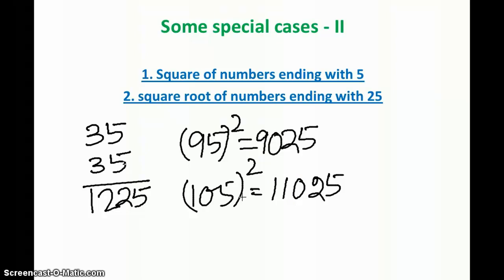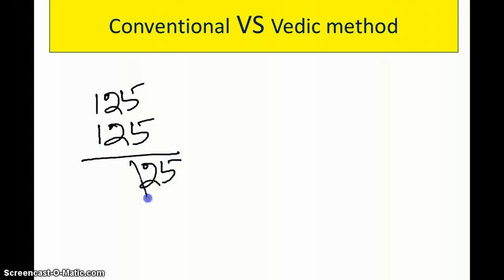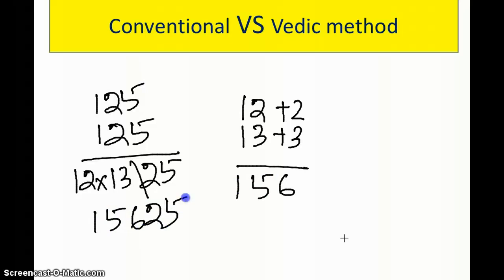Now let's expand to bigger numbers. For bigger numbers we may need to do some multiplication. Let's find 125 squared. That is 125 into 125. Put 25 here, then multiply 12 and 13. Applying the previous technique: 12 is 2 more than 10, 13 is 3 more than 10, so 12 into 13 gives 156. The answer is 15625. This shows how effective this method is compared to the conventional way.